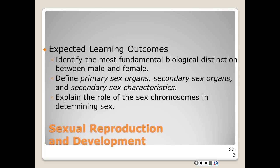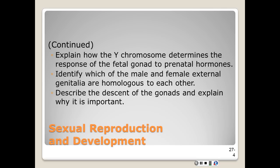We're going to look at the fundamental biological distinction between male and female, as well as the primary and secondary organs and secondary sex characteristics. We should be able to explain the role of the sex chromosomes in determining sex, how the Y chromosome determines the response of the fetal gonad to prenatal hormones, identify which male or female external genitalia are homologous to each other, and describe the descent of the gonads and explain why it is very important.